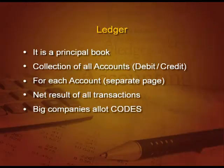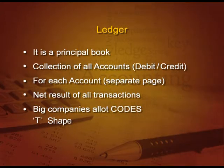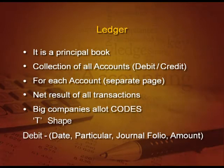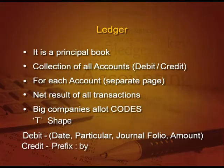This account is in T shape. On one side debit, on another side credit. The debit side contains date, particulars, journal folio, and amount. Similarly, all these four columns are present on the credit side also. Debit entries are recorded on the debit side with a prefix 'To', and credit entries are recorded on the credit side with a prefix 'By'.